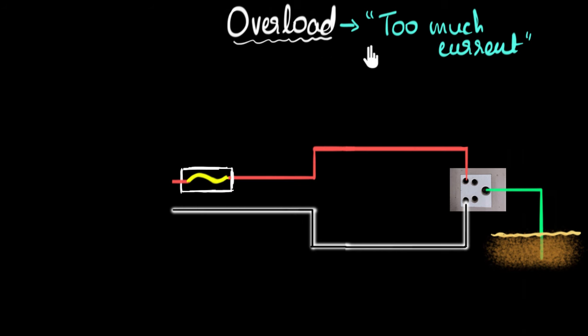Okay, so we understood what overload is, but the question could be, what causes this overload? What causes too much current to flow in our circuit? Well, there could be multiple reasons for that. One of the reasons that causes too much current is basically too much voltage. What does that mean?